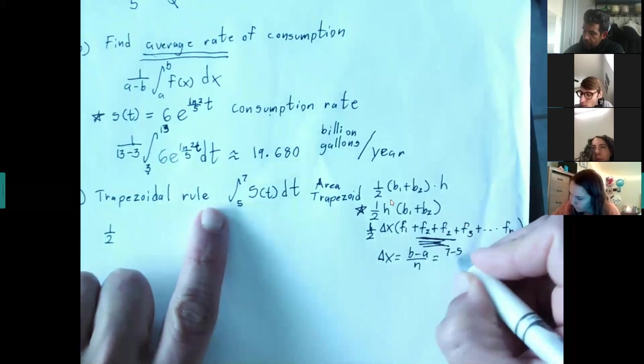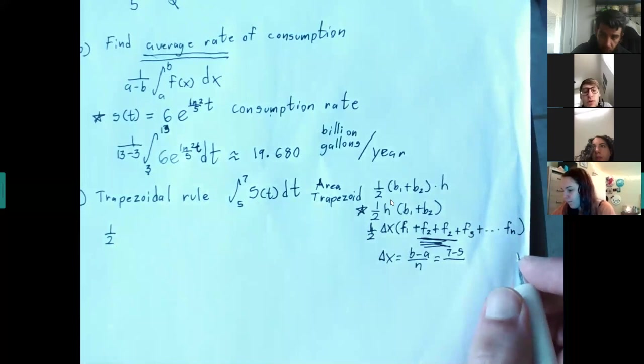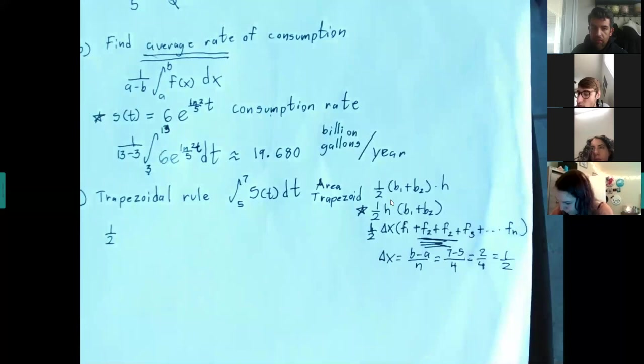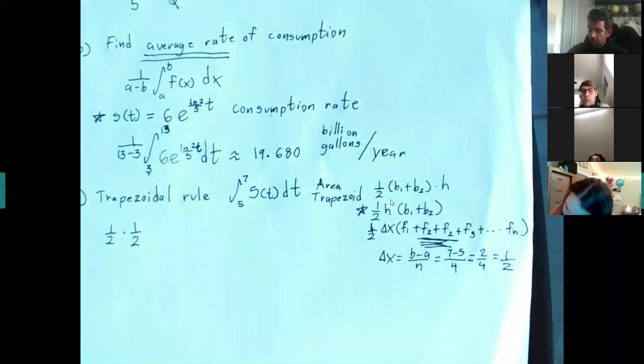They tell us to use four subdivisions, so N = 4. Delta X = (7 minus 5) over 4 = one-half. So the one-half out front together with delta X equals one-half — this right here is delta X. Just making sure we're on the same page.